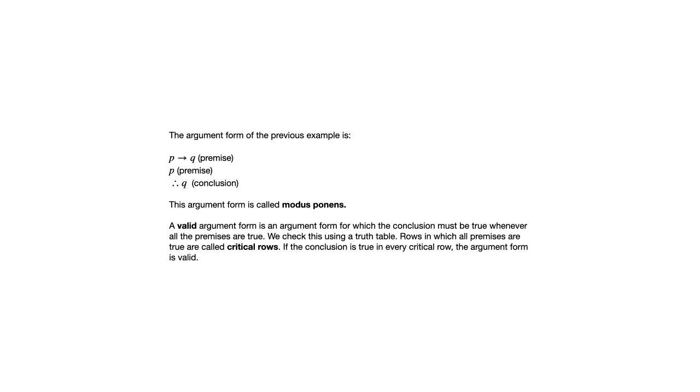Now, the title of this section is valid and invalid arguments. So we need to talk about what it means to be valid. A valid argument is an argument form for which the conclusion must be true whenever all the premises are true. And the way that we determine that is with a truth table. So what you're looking for is, whenever we see all true premises, does that guarantee that the conclusion is true? If so, it's a valid argument.